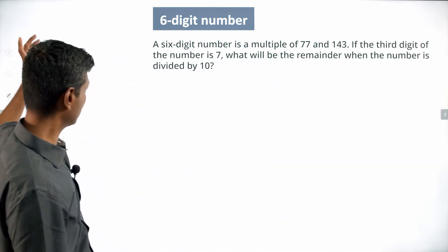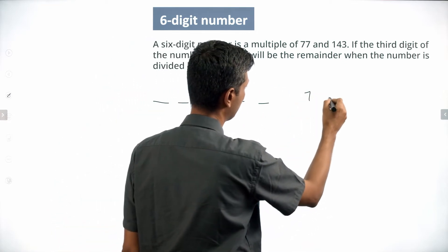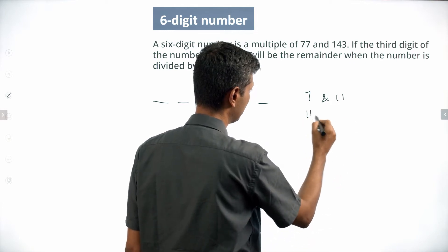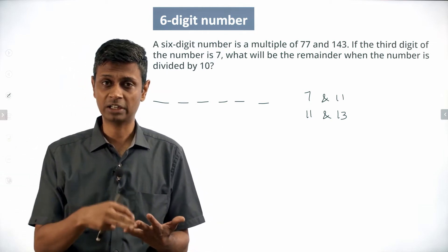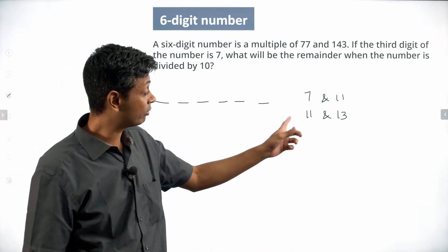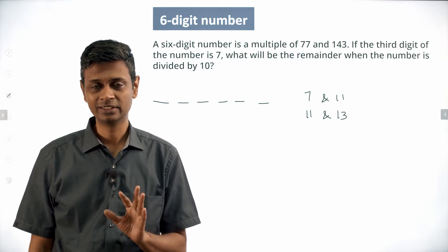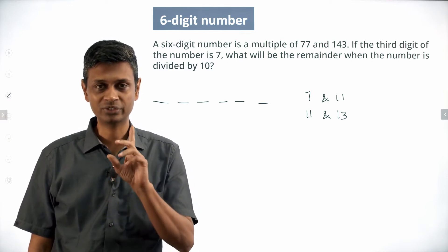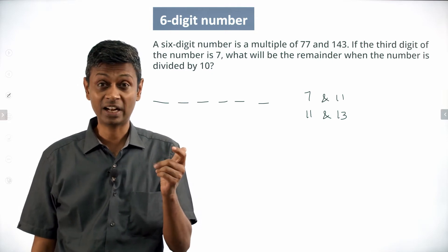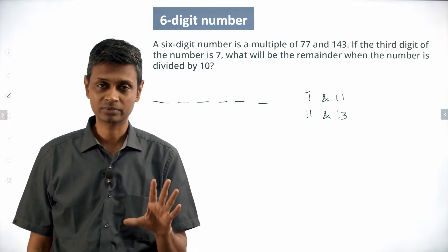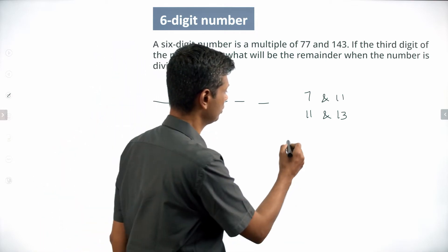So our six-digit number is a multiple of 7 and 11 (from 77), and a multiple of 11 and 13 (from 143). Combining these, it is definitely a multiple of 7, 11, and 13. Since 7, 11, and 13 are all prime and share nothing in common, the number must be a multiple of 7 × 11 × 13.